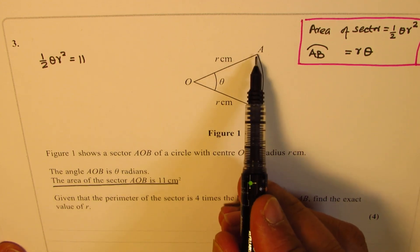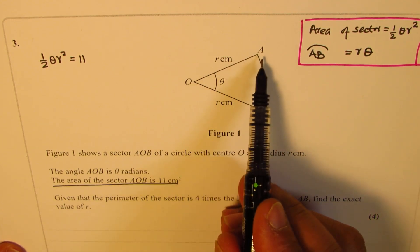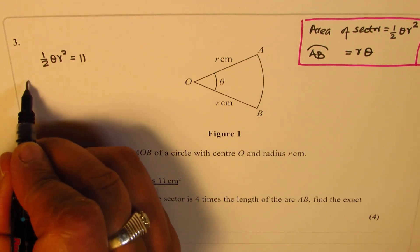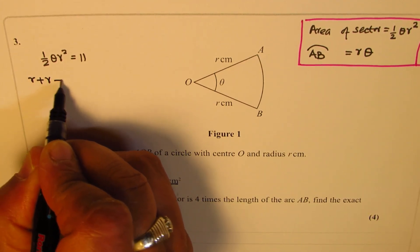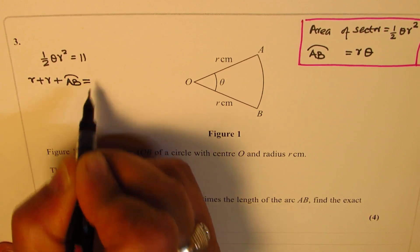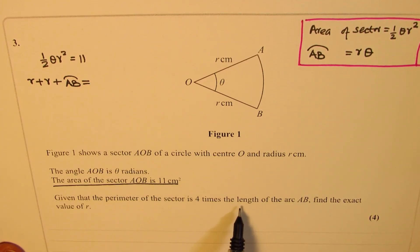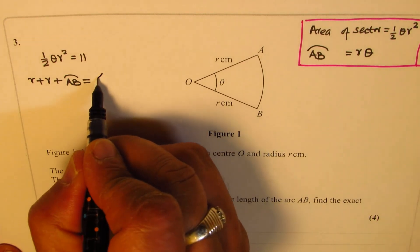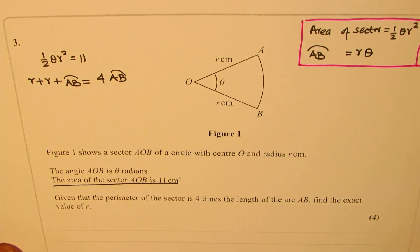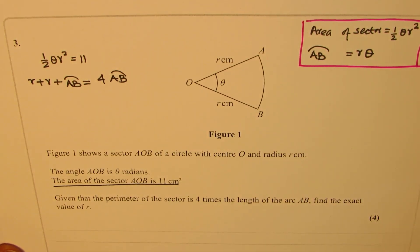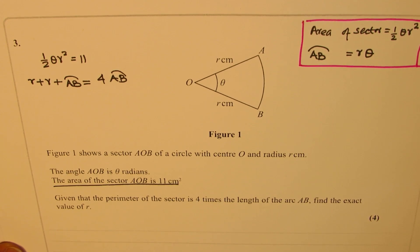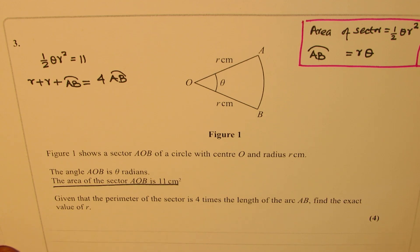the sum of all these three sides, that is r plus r plus arc AB. So r plus r plus r AB is equal to four times the length of arc AB. That is what your second equation is. We have two equations, two variables, so that should not be difficult. Now we need to find exact value of r. You can always pause the video now and then look into my suggestions.